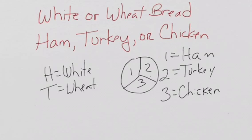So you could spin a spinner. If it landed on two, hey, that means they wanted turkey. If it landed on one, that means they wanted ham.